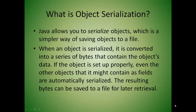Java allows you to serialize objects, which is a simpler way of saving objects to a file. When an object is serialized, it is converted into a series of bytes that contain the object's data. If the object is set up properly, even the other objects that it might contain as fields are automatically serialized. The resulting bytes can then be stored to a file for later retrieval.